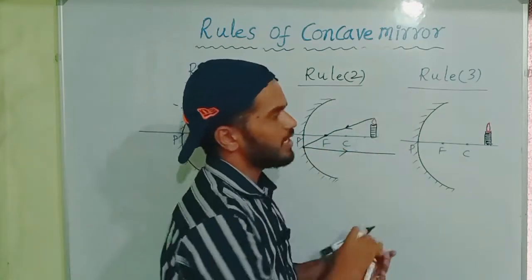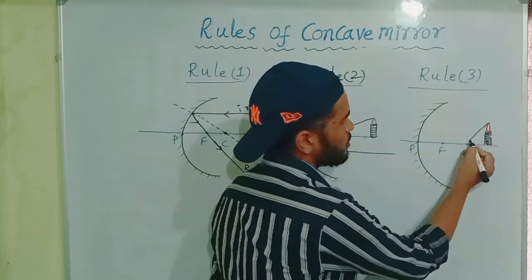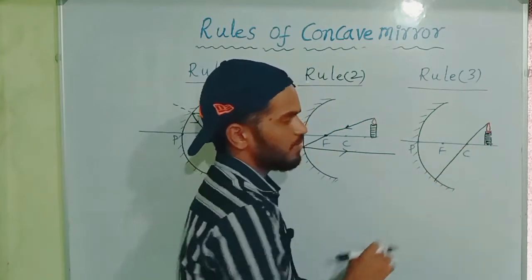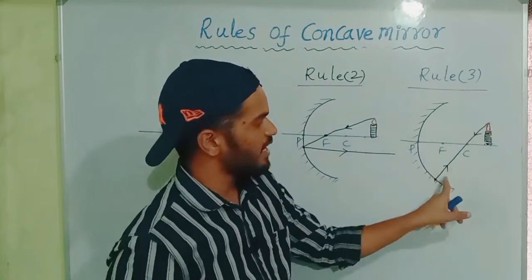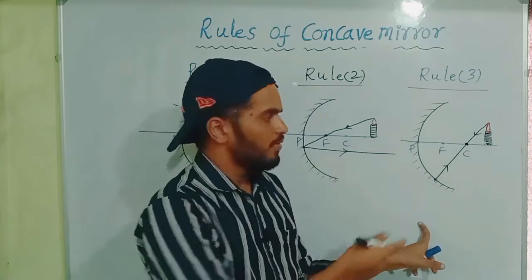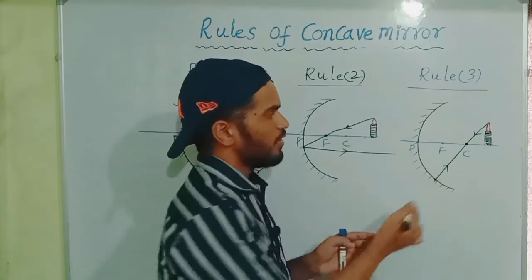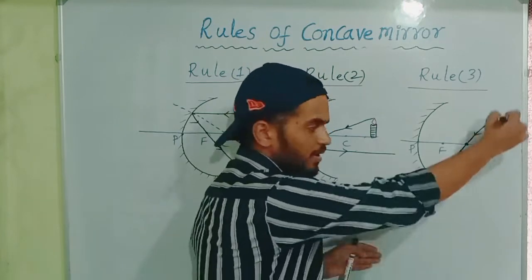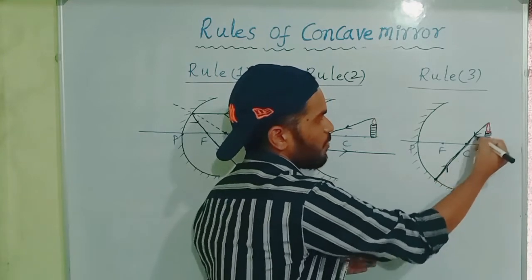Rule 3: Take the light ray which passes through the center of curvature. Whenever the light ray passes through the center of curvature, after reflection, it retraces back in the same path. Because you can always draw the normal through the center of curvature, and the normal does not bend. So the reflected ray goes back in the opposite direction.